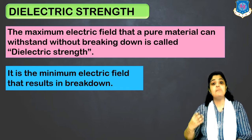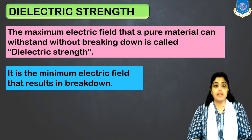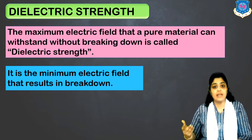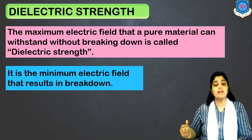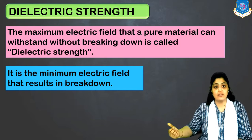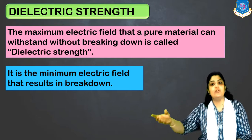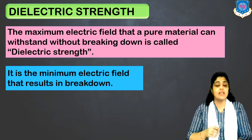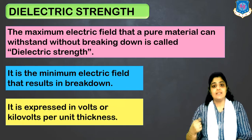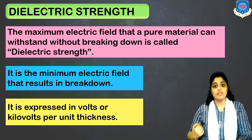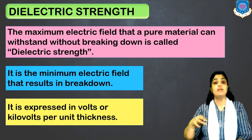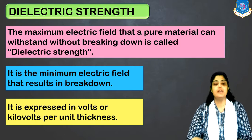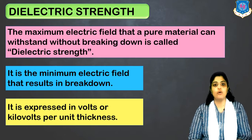More precisely, dielectric strength is the minimum electric field which results in breakdown — the minimum value that can lead to breakdown of the dielectric material. That is why a material should have a very high dielectric strength, so that only at a very high value does it break down, making it usable in different applications. It is generally expressed in units of kilovolts per meter of thickness.